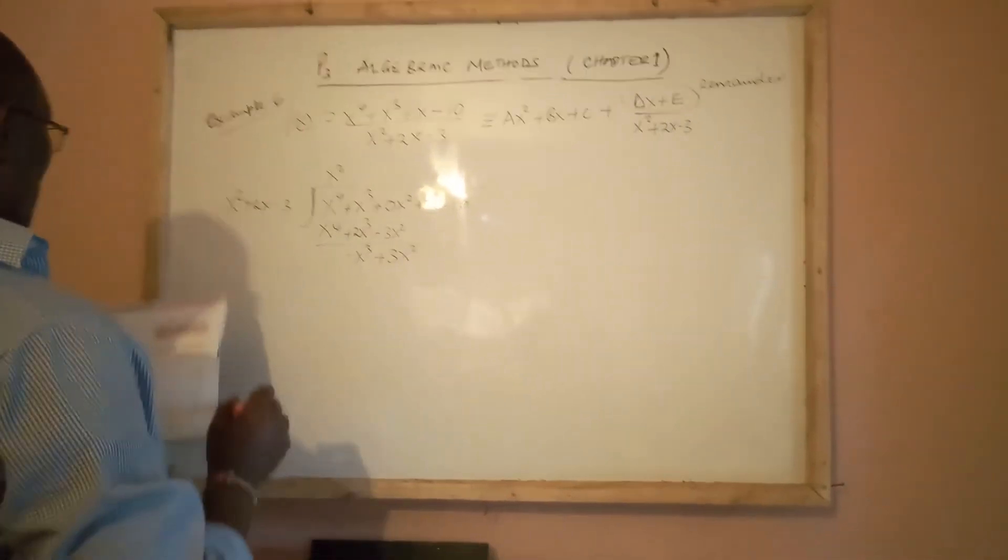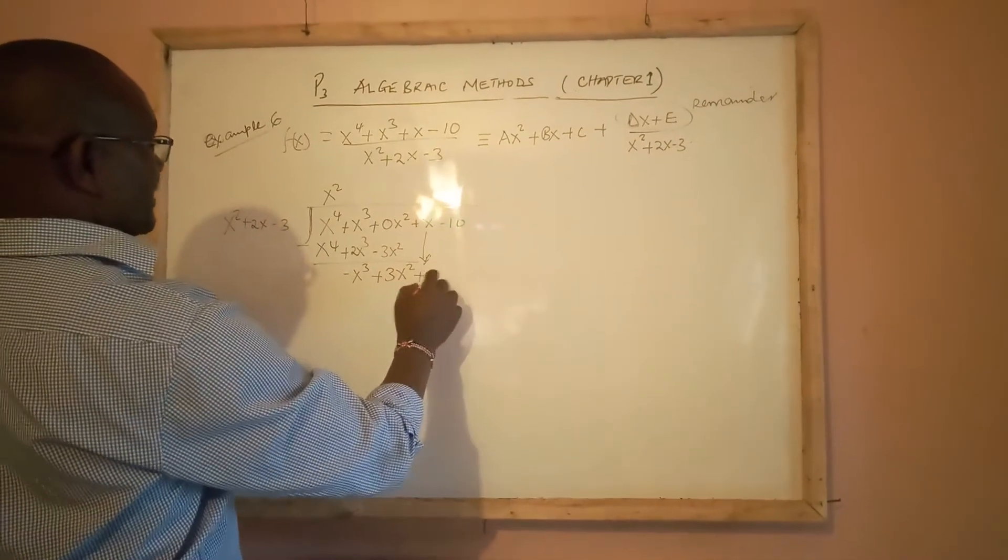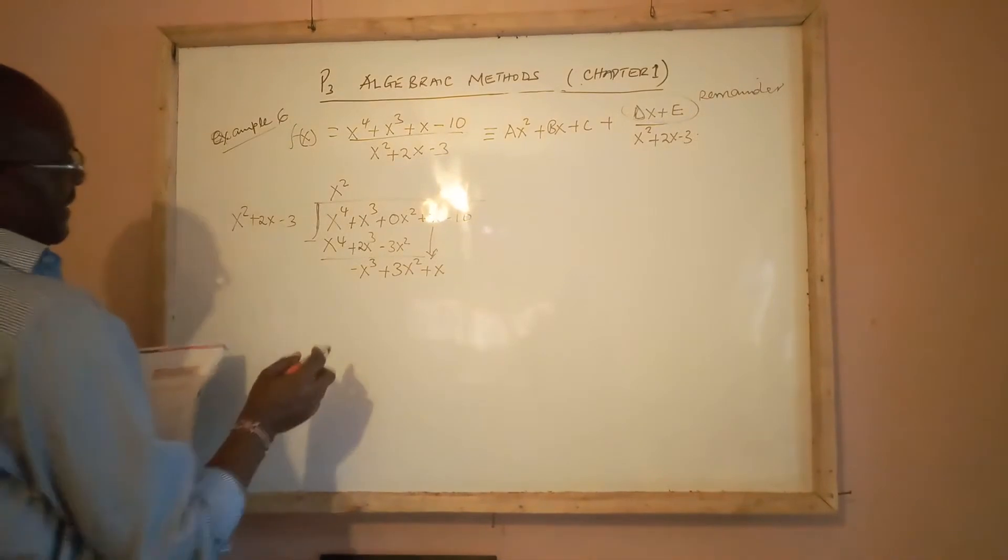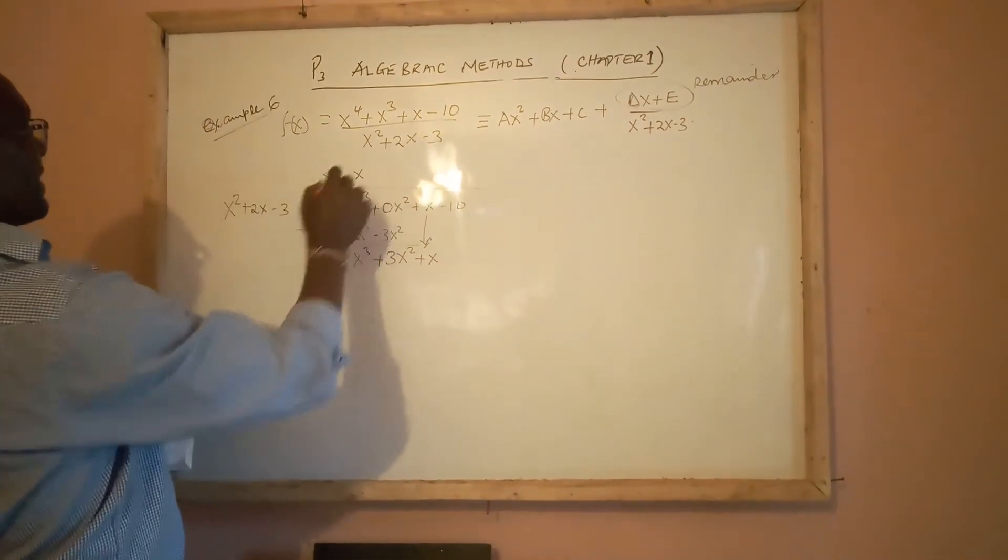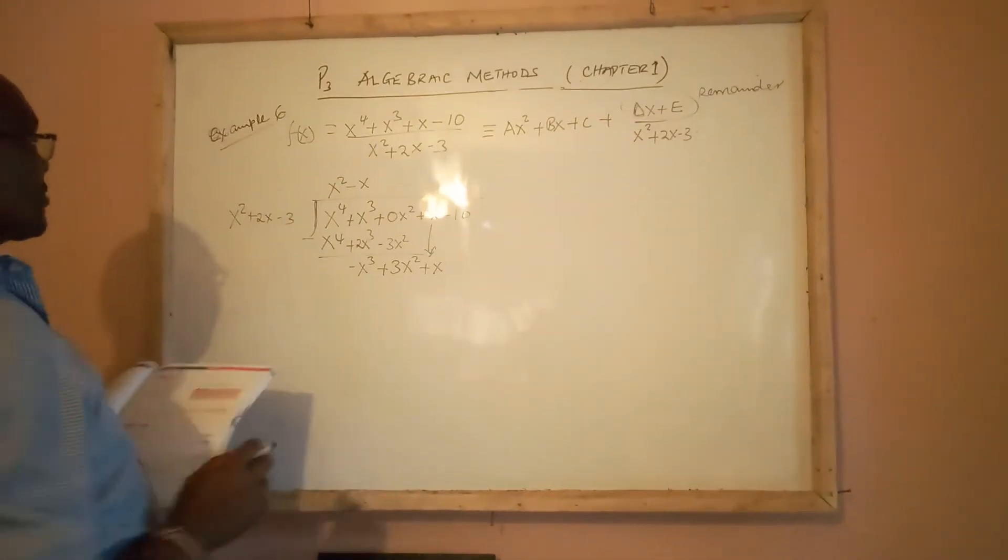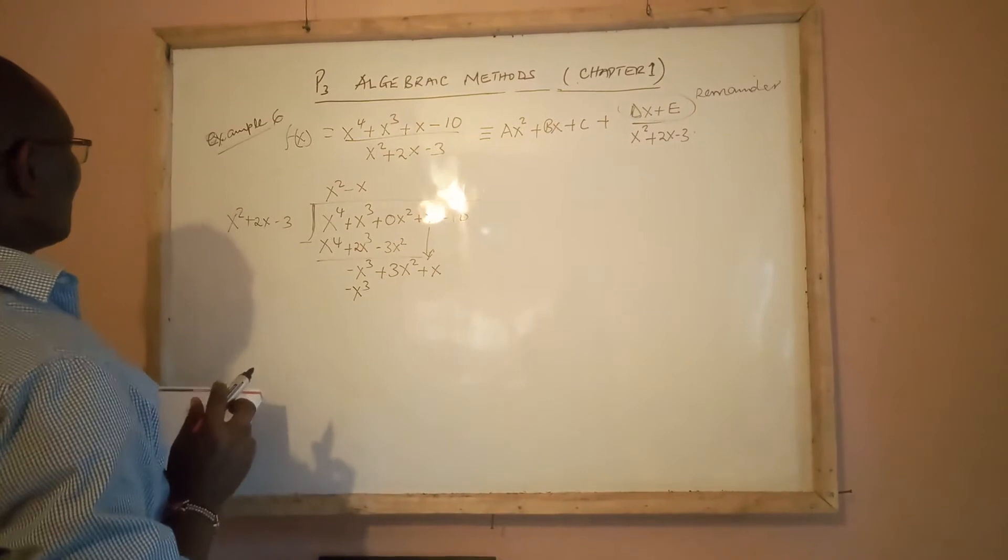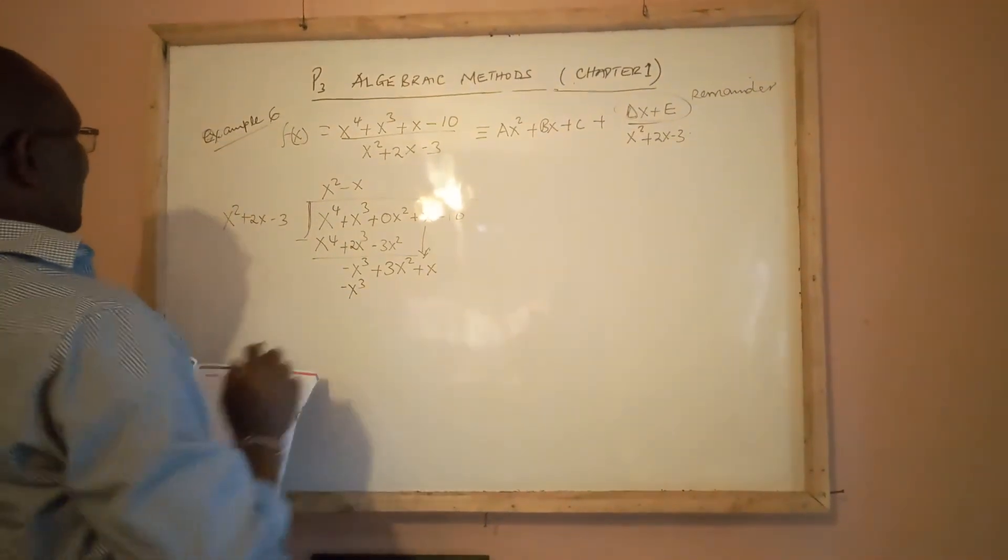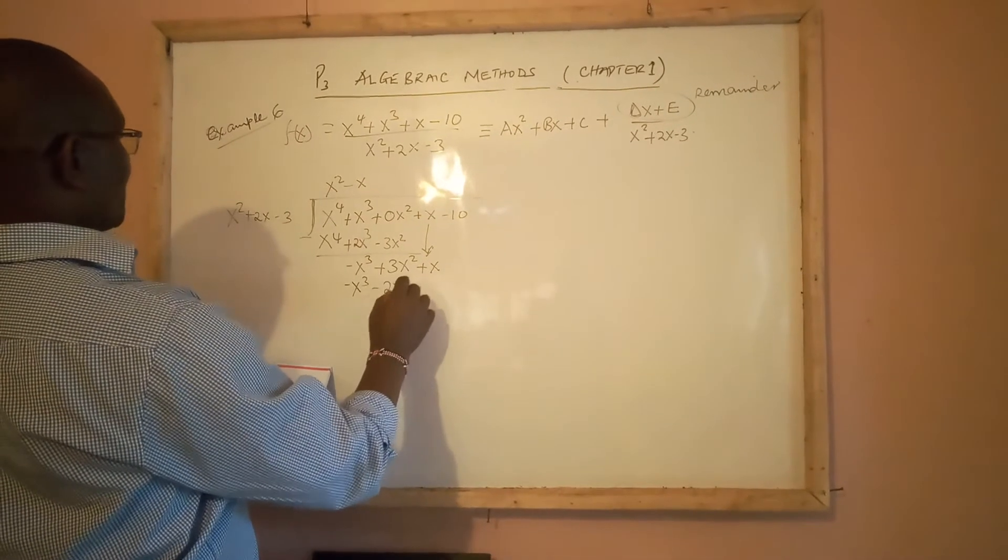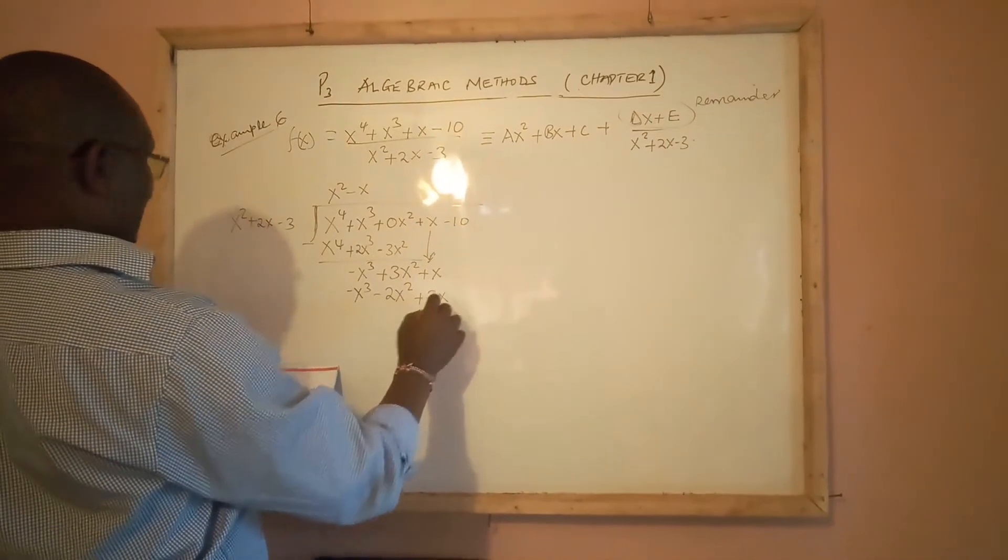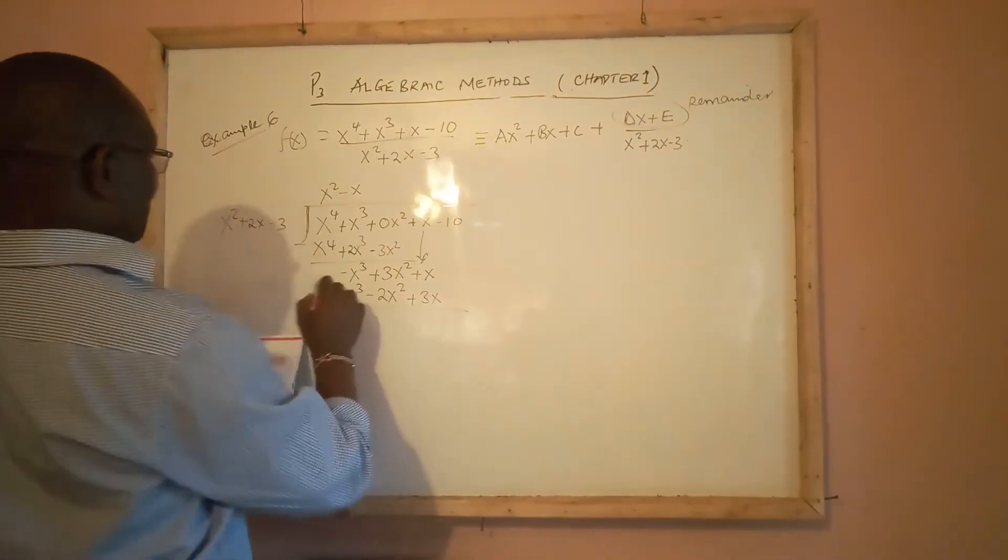We bring down x. So -x^3 divided by x^2 is -x. Multiply with -x throughout, we have -x^3 - 2x^2, of course, plus 3x. You subtract that part.